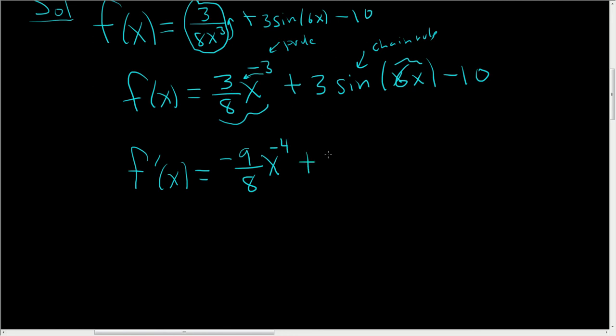Plus 3 times the derivative of sine, which is cosine. So it'll be cosine 6x, don't touch the inside—it's the chain rule—times the derivative of the inside. The derivative of 6x is 6, minus 0, the derivative of 10 is 0.